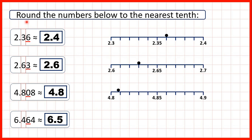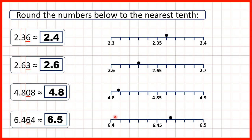Also, rounding to the nearest tenth and rounding to one decimal place mean the same thing. Whether we're rounding to the nearest tenth or to one decimal place, we only have one digit after the decimal point. We can show 6.464 on a number line — we can see that it's closer to 6.5 than it is to 6.4. We can also see that 6.464 is between 6.46 and 6.47.